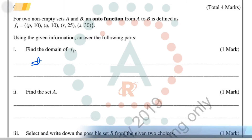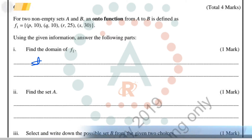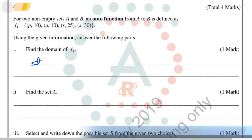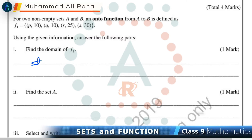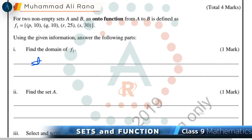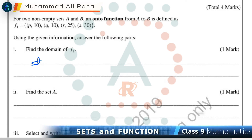Here we have our first question from Chapter 1, Sets and Functions. For two non-empty sets A and B, an onto function from A to B is defined as f1 = {(p, 10), (q, 10), (r, 25), (s, 30)}. Using this function we have to answer the following parts.